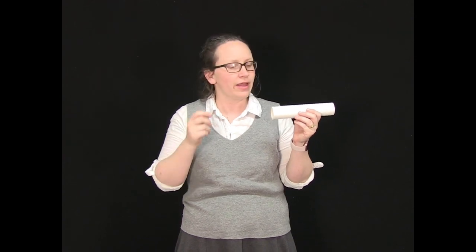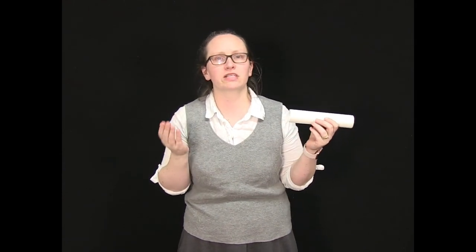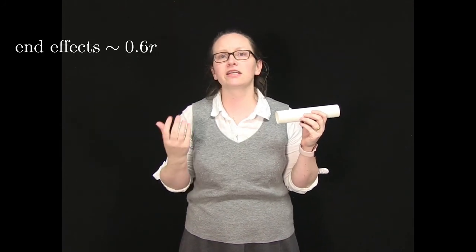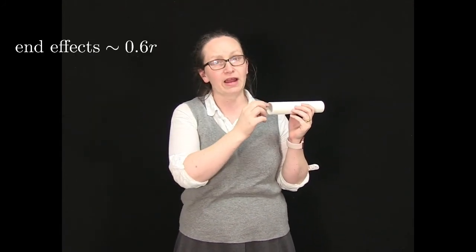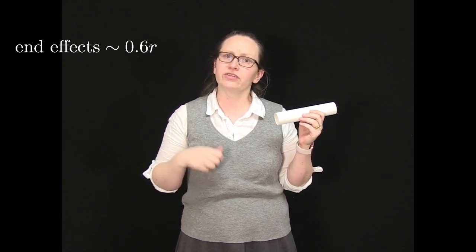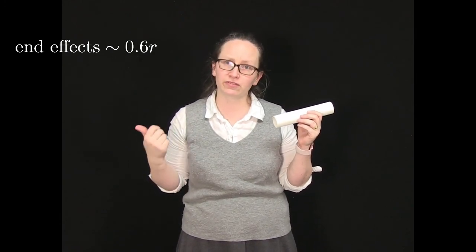Now the size of the end effect is independent of the frequency of the wave that we input. It does however depend on the pipe that we're using. People have done lots of experiments and they found that a rule of thumb is that the size of the end effects is about 0.6 times the radius of the pipe. So this is a useful rule of thumb to use.